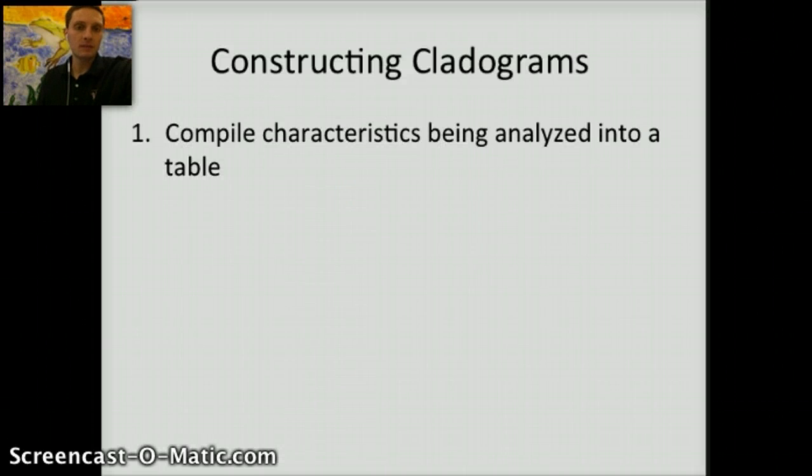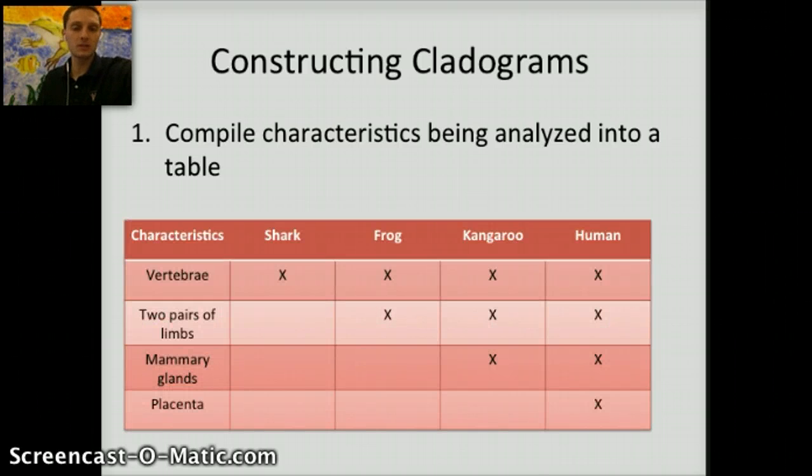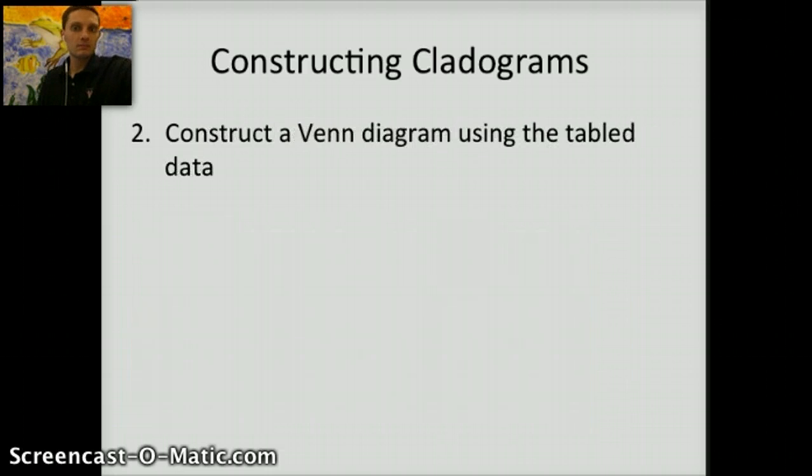The first step is to compile characteristics that are being analyzed into a table. I've done this here for you. Often you'll be given this information, sometimes you'll have to look it up. In this situation, we've got four different species: shark, frog, kangaroo, and human. And we're looking at four different characteristics: vertebrae, two pairs of limbs, mammary glands, and placenta.